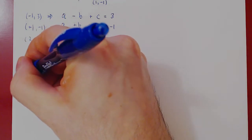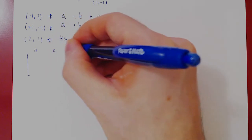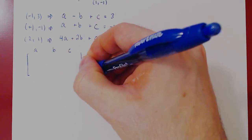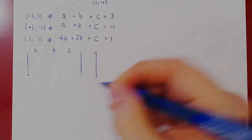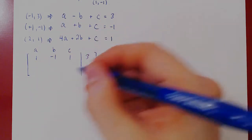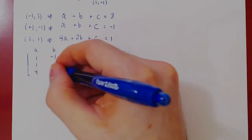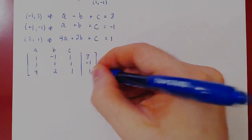We'll keep the order the same, as we already have a leading one here for a. So we have a, b, c, as our variables. First row, one, negative one, one, three. Second row, one, one, one, negative one. Third row, four, two, one, one.